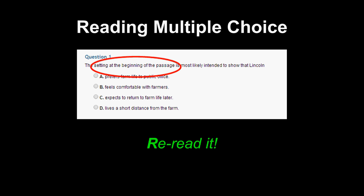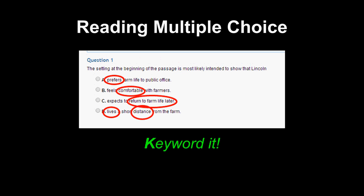The re-reading strategy can help you answer questions effectively, but it's not the only strategy here. We can also use keywording. The keywording strategy involves looking at key words in the answers to understand how one answer differs from another. I have circled key words and phrases in each answer — you can circle or underline, and on an OAA you are free to write. A is about a preference, B is about his comfort, C is about him returning to farm life later, and D is about the distance he lives from a farm. This way I can quickly size up the differences among the answers and respond effectively.